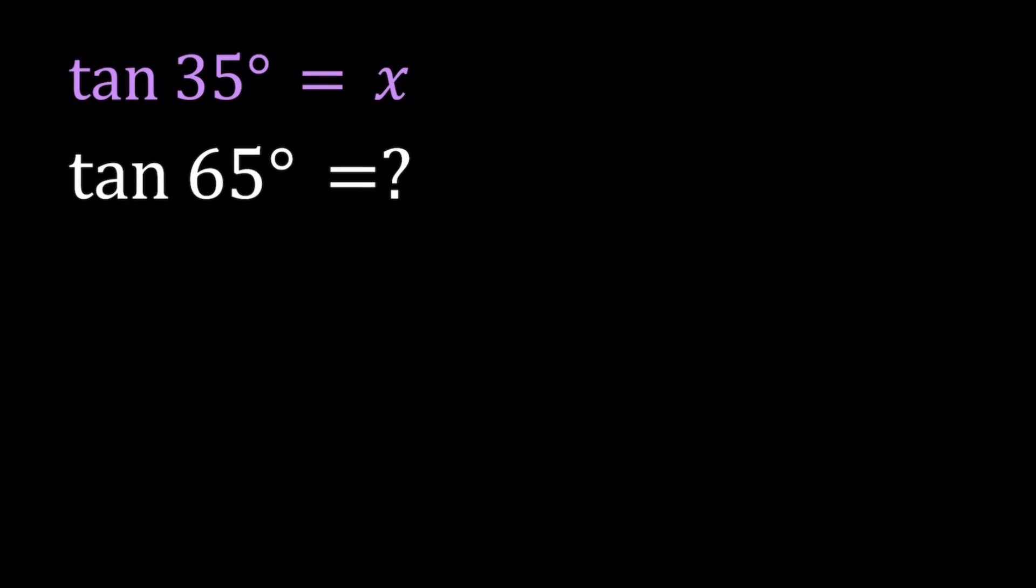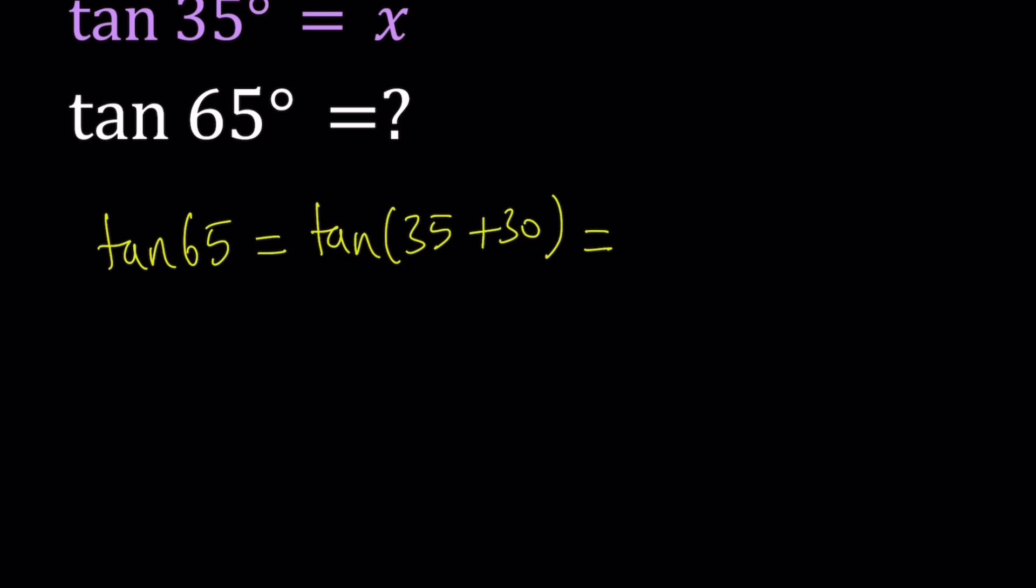So tangent 65 degrees, even though I don't write it, can be written as tangent 35 plus 30. That's kind of like the obvious solution, right? Like, is there another way to do it? We'll see.